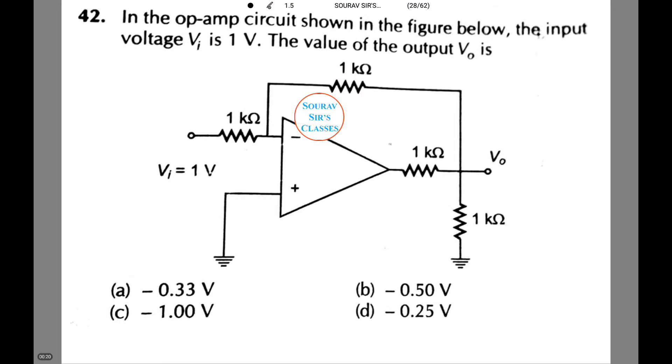In the op-amp circuit shown in the figure below, the input voltage Vi is 1V. The value of the output V0 is as follows. Notice the circuit.